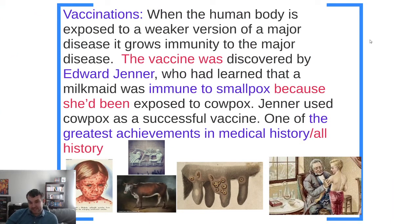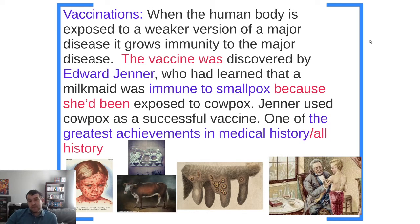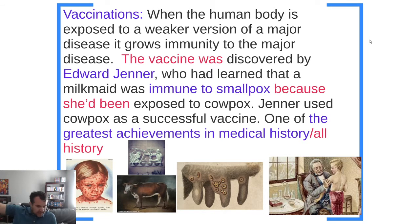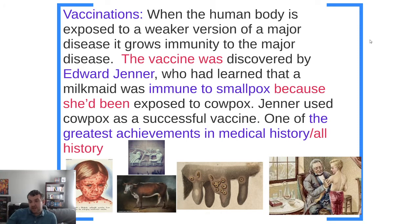Now let's talk about vaccinations — a very appropriate concept to talk about in 2021. A vaccination is when the human body is exposed to a weaker version of a major disease. Your human immune system, once it gets a disease, will make you sick and it'll really suck. But assuming you survive the disease, your immune system will learn from that experience and become sort of better equipped to fight that disease in the future.